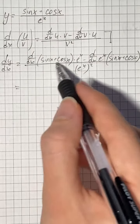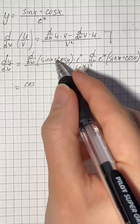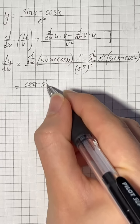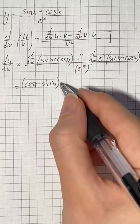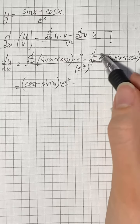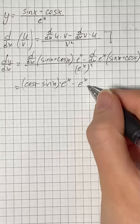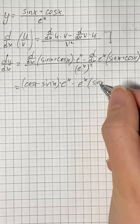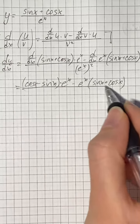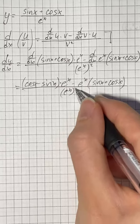The derivative of sine of x equals cosine of x, and the derivative of cosine of x equals negative sine of x, times e to the power of x. The derivative of the exponential function is the function itself, times sine of x plus cosine of x, all over e to the power of x squared.